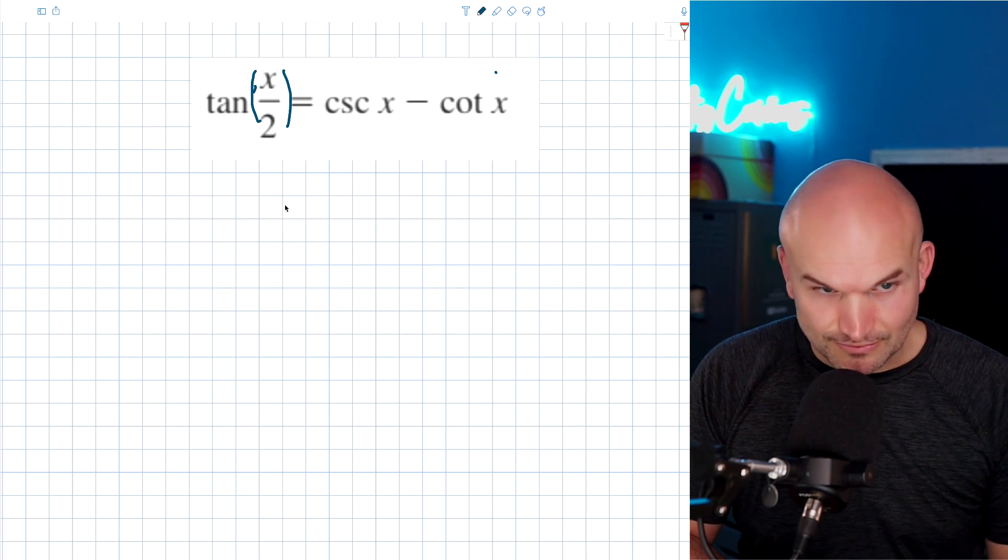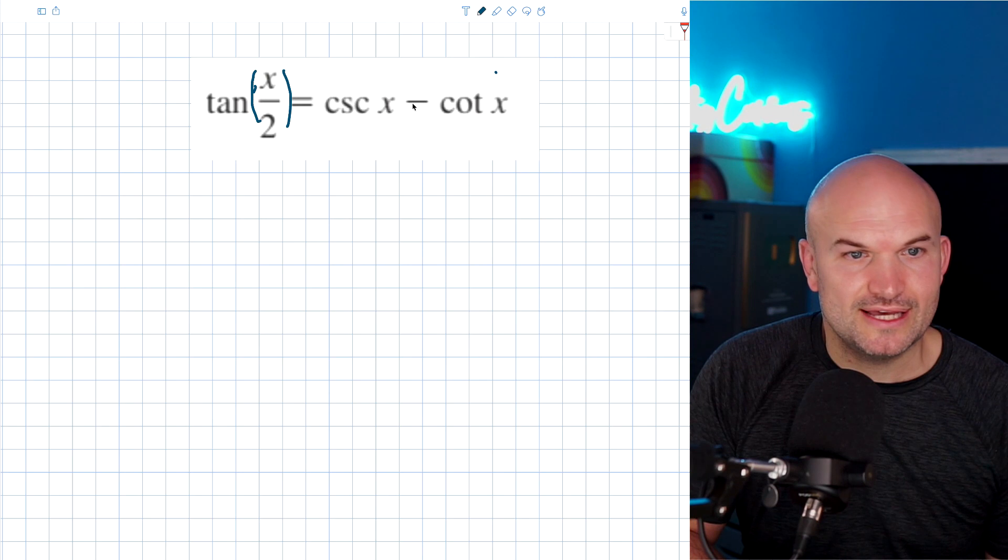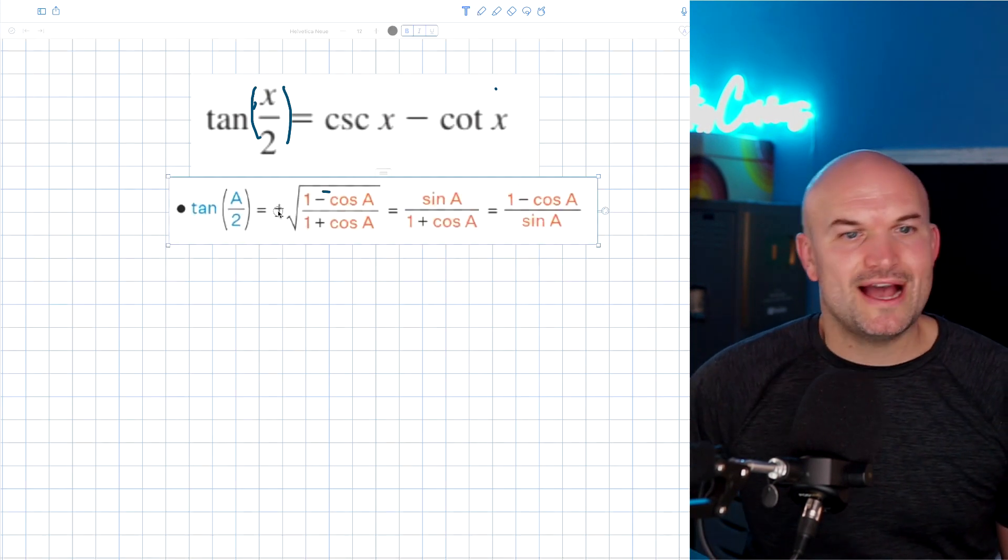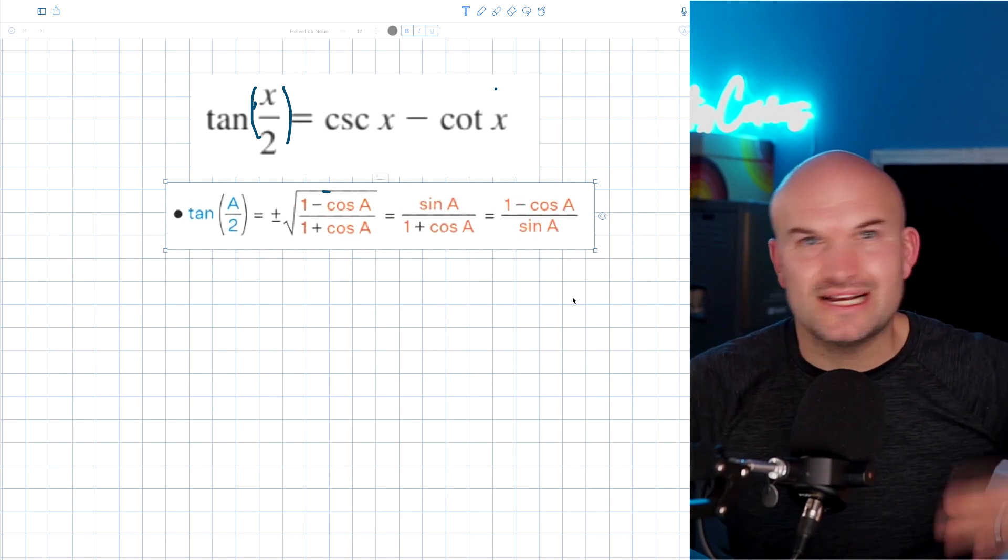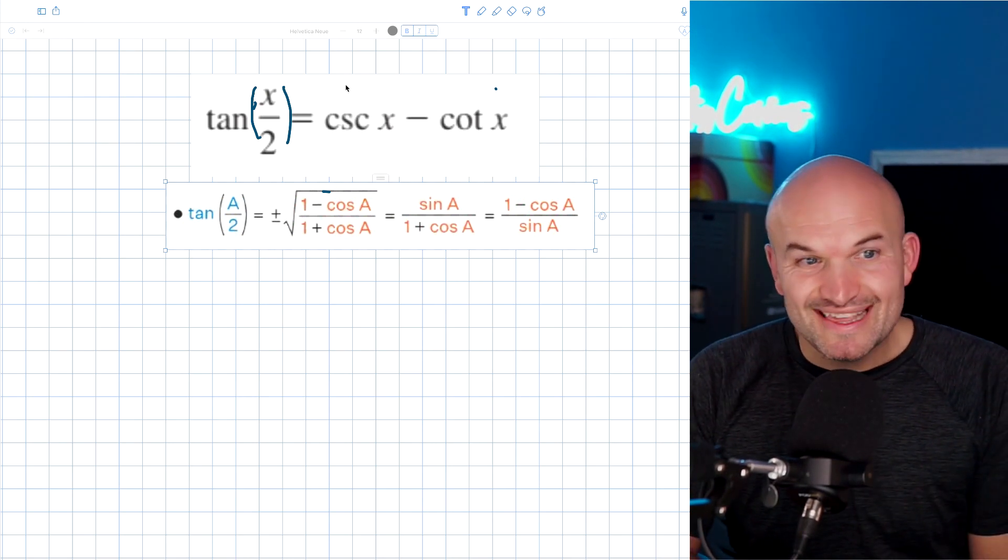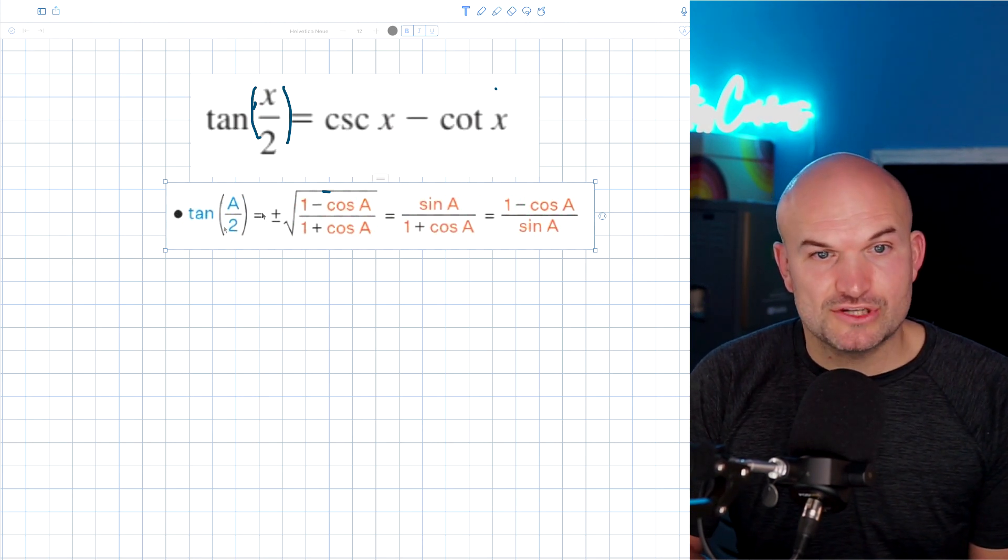So the half angle formulas for tangent are going to look like this here. These are your half angle formulas for tangent. Now, again, they're using A instead of X and whatever, that's fine. This is what the half angle of tangent or tangent of a half angle is going to equal to.